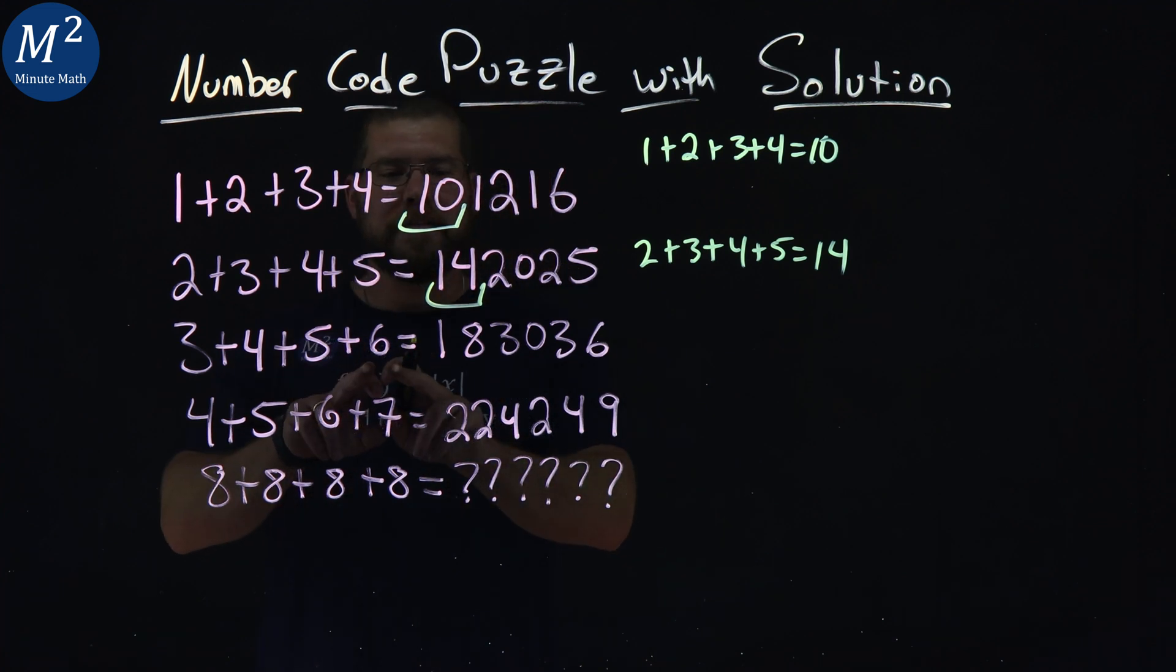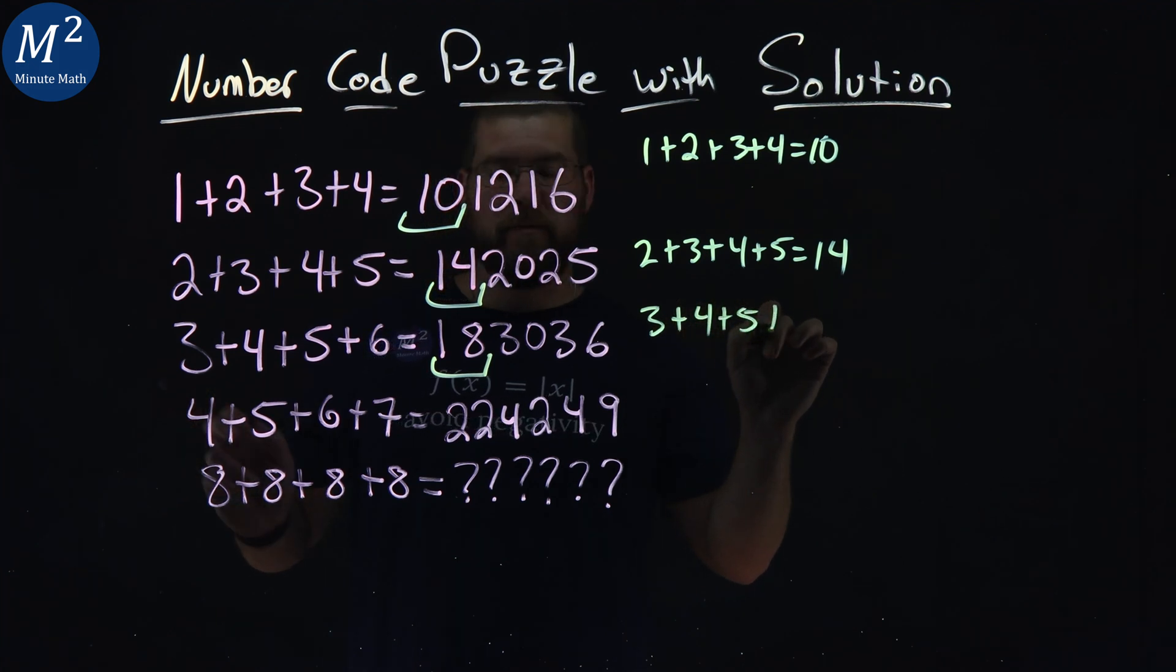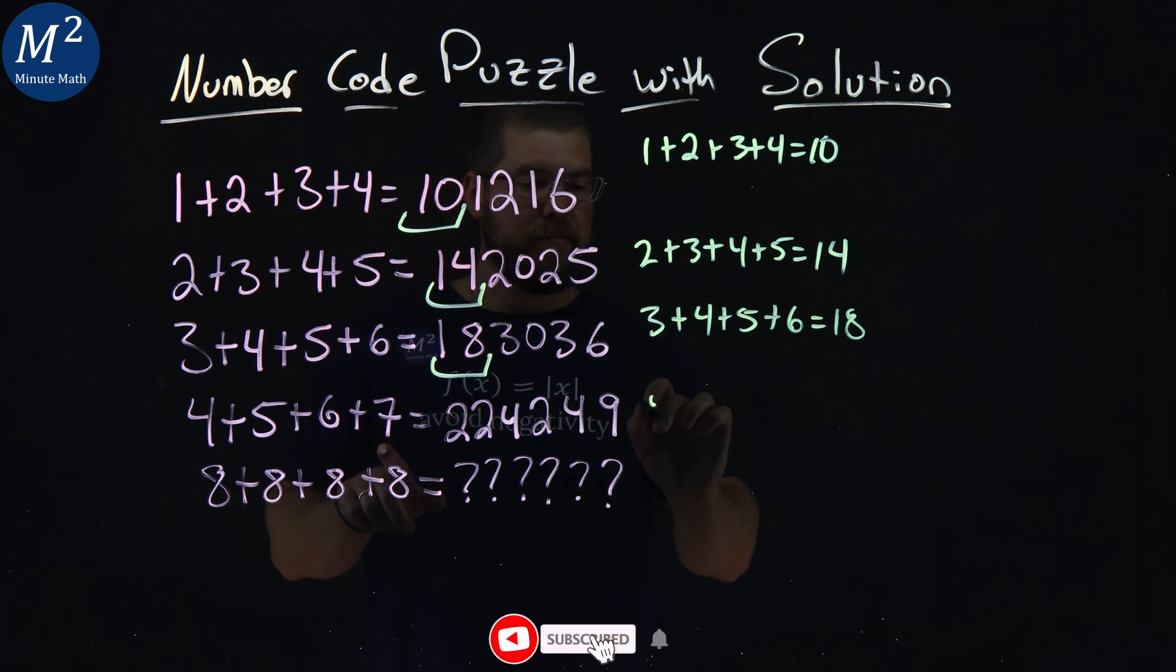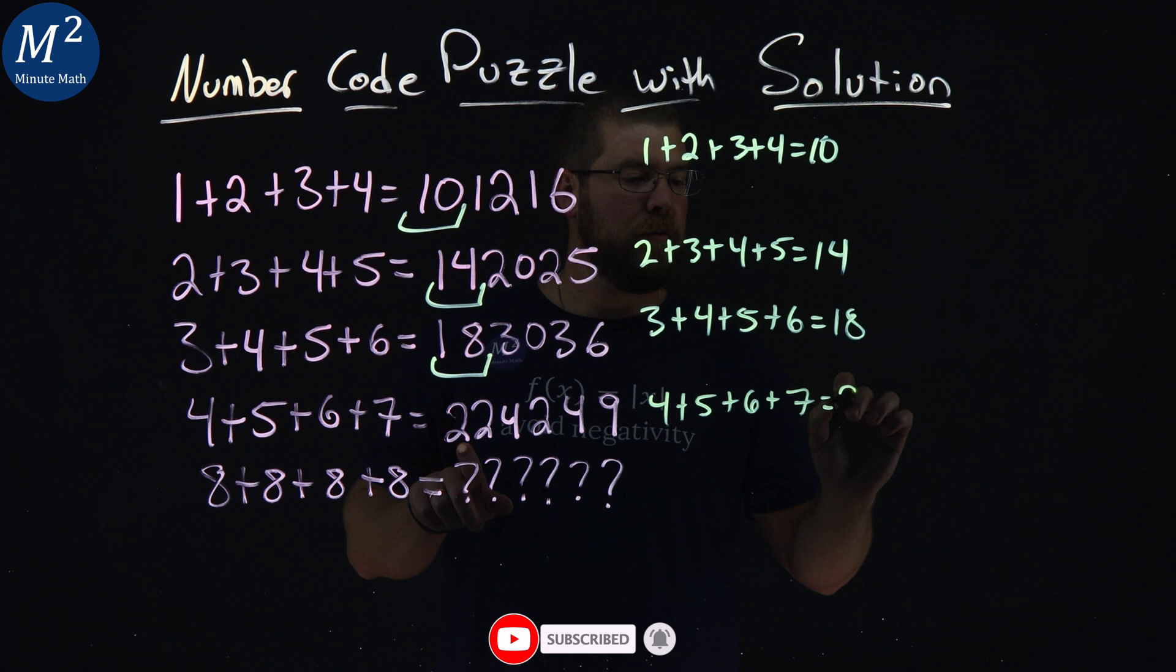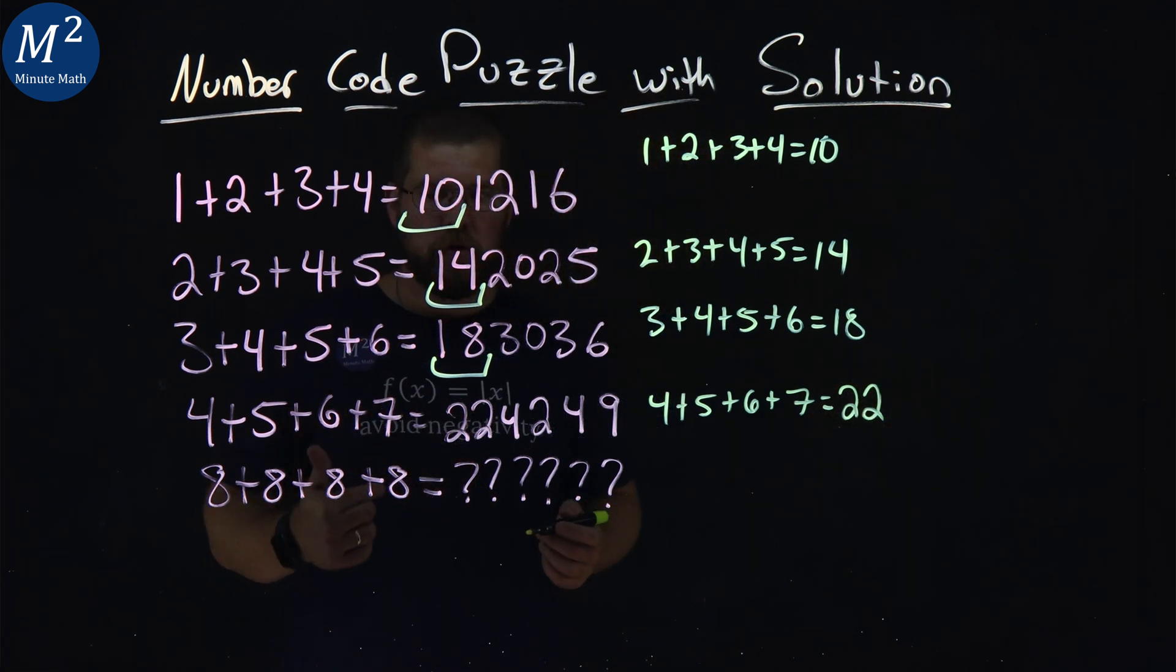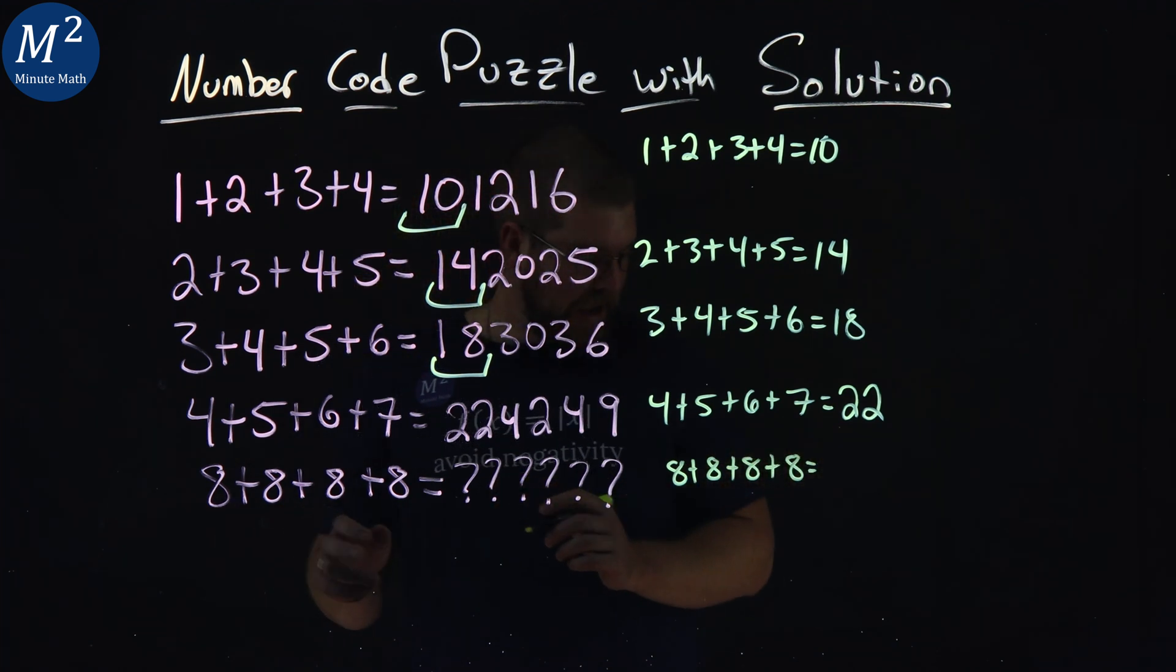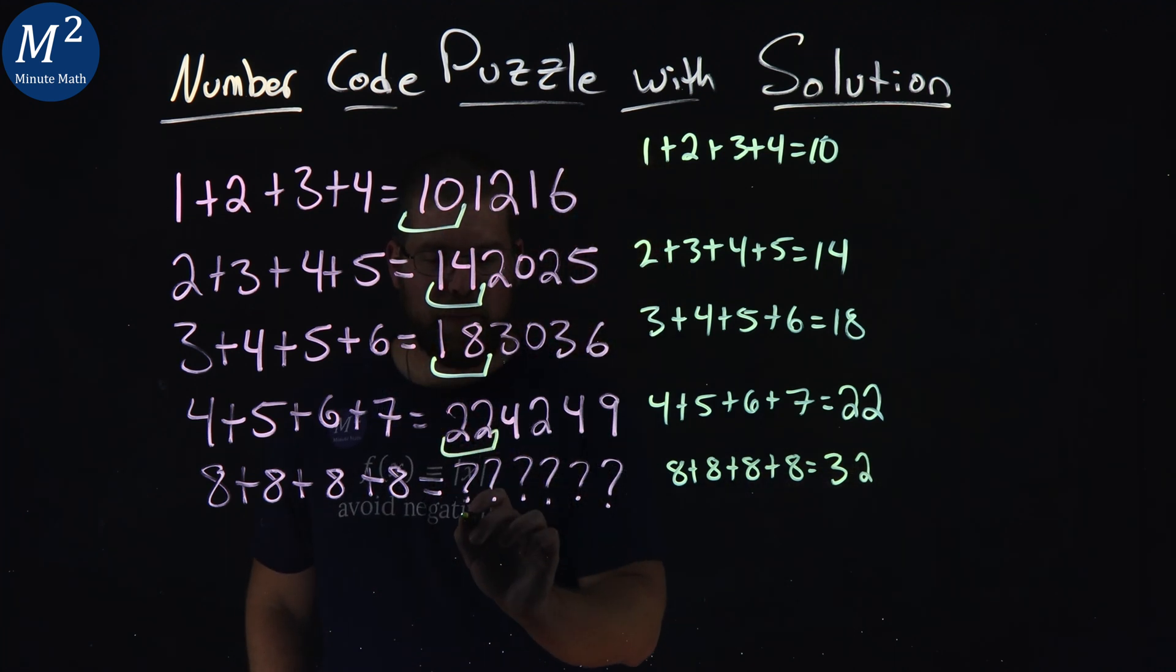Keep on going. As you can see, 3 plus 4 plus 5 plus 6 does give me 18. So 4 plus 5 plus 6 plus 7 should give me a 22 right there. So now we want to add up all of our 8s. So 8 plus 8 plus 8 plus 8 equals, and that adds up to be a 32. And so our first two digits, if we're following that pattern, is a 32.